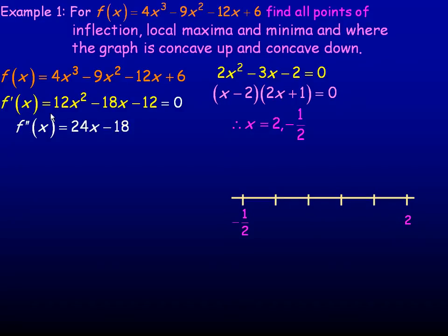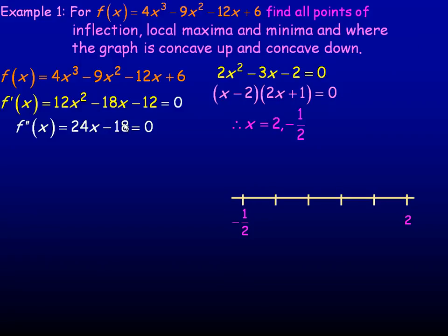Differentiating the first derivative, we get 24x minus 18 for the second derivative. We set it equal to 0, and that gives us where the possible point of inflection might be. Solving for x, we bring 18 over and divide by 24, so x equals 18/24, which reduces to 3 quarters, or 0.75.